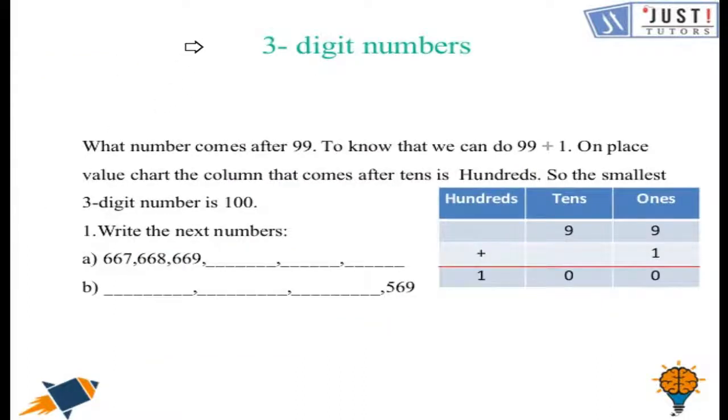Let us move ahead and let us have a look at 3 digit numbers. So what do you understand by a 3 digit number? As the name suggests a 3 digit number is a number which has 3 digits in it and the digits represent hundreds, tens and ones from left to right.